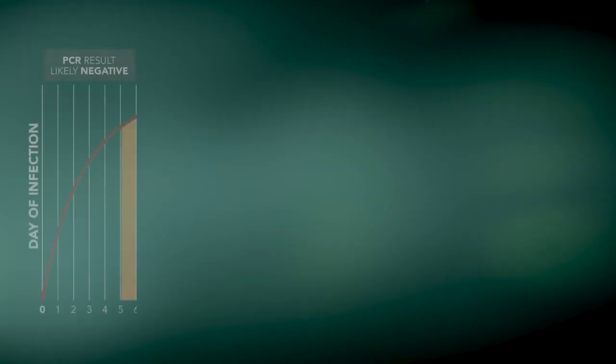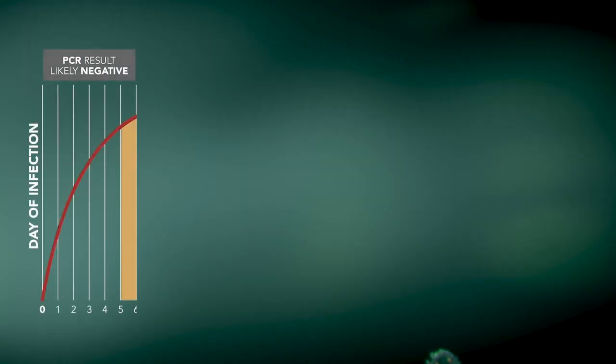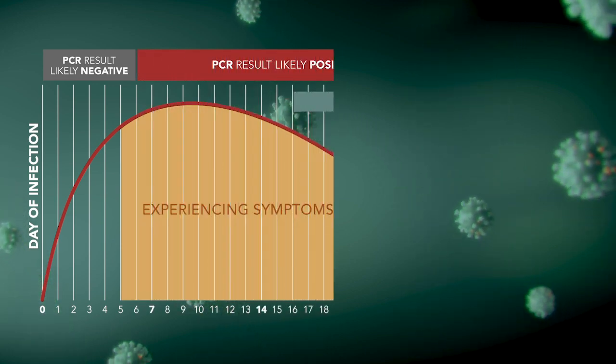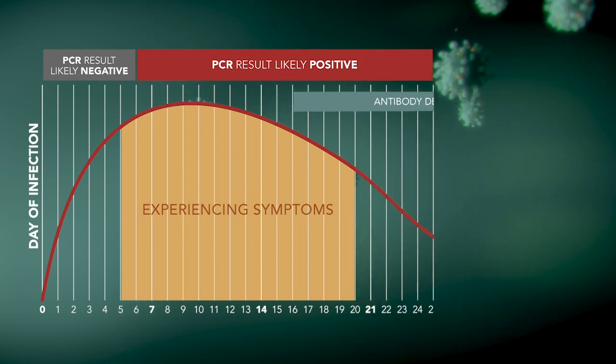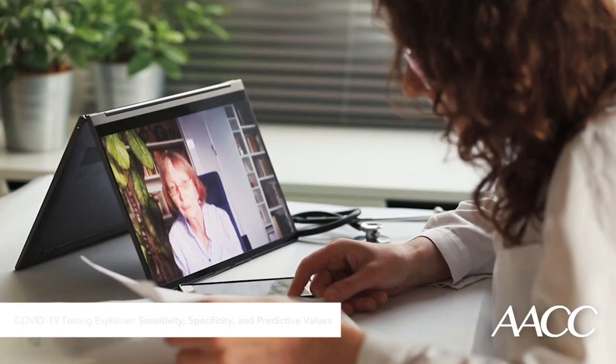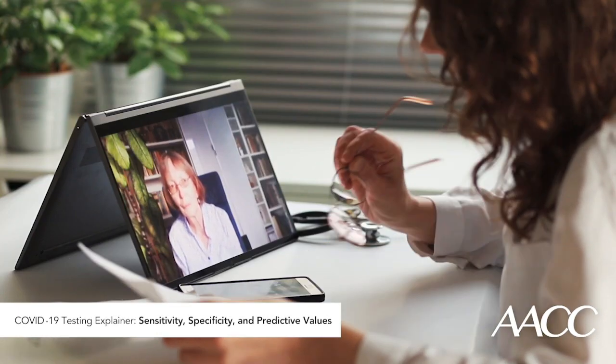PCR tests for the virus tend to be highly sensitive and specific, but their sensitivity depends on many pre-analytical variables such as sample type and the timing of sample collection relative to day of infection. Testing a person too soon following infection will likely yield a negative result, and tests performed after COVID-19 symptoms have resolved can still be positive due to sustained shedding of inactive viral particles. There is no lab test that is 100% sensitive and specific, which is why it's important to interpret test results in conjunction with other information about the person being tested. Lab tests have real value, but only when used and interpreted correctly.